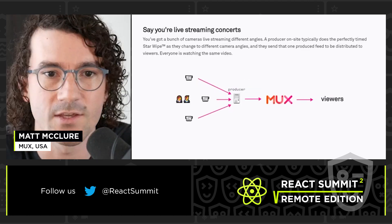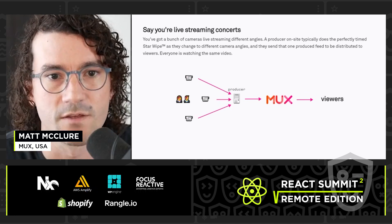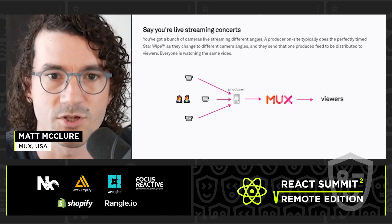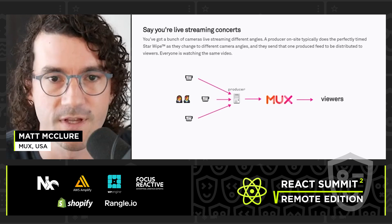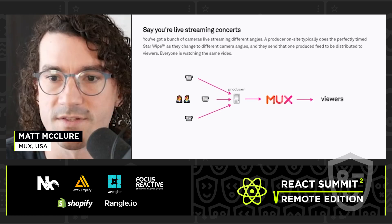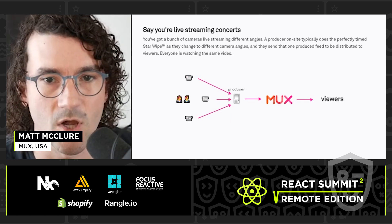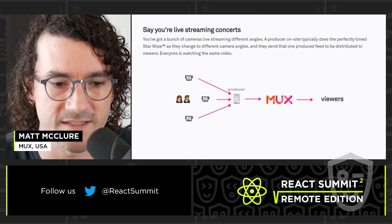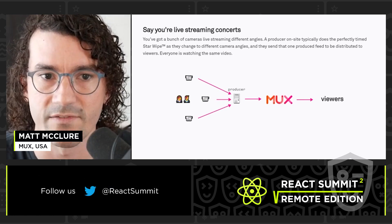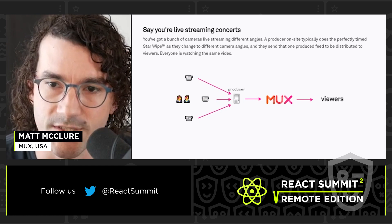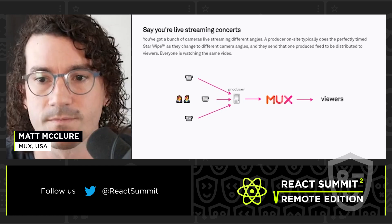So let's say you're streaming live concerts, live music. You've got a bunch of different cameras streaming, a bunch of different angles — one's on the drummer, one's on the singer, one's on the audience. And a producer on site is typically deciding which one of those feeds to show at any given time. So they might do a nice little transition, go from the drummer to the audience, etc.